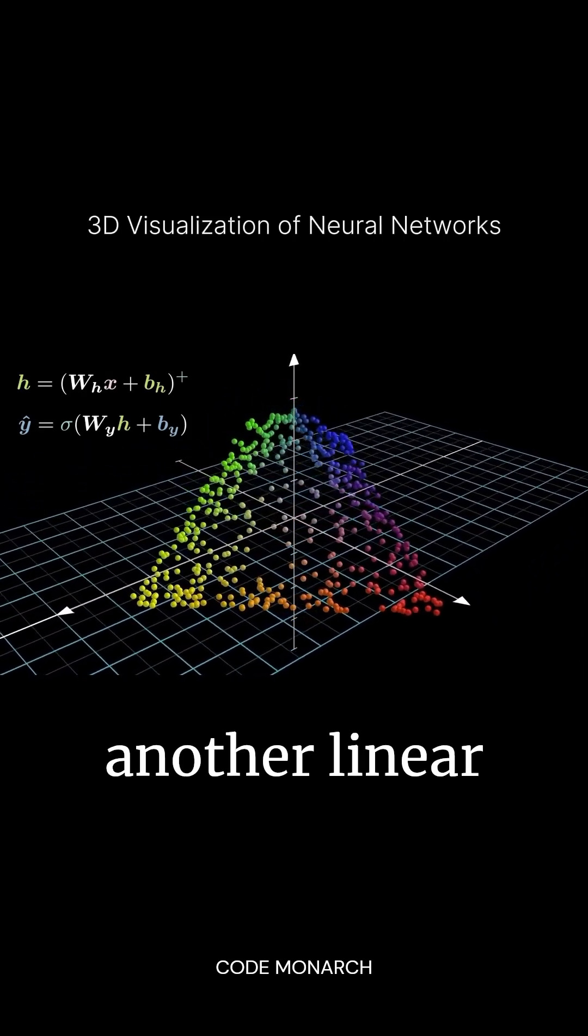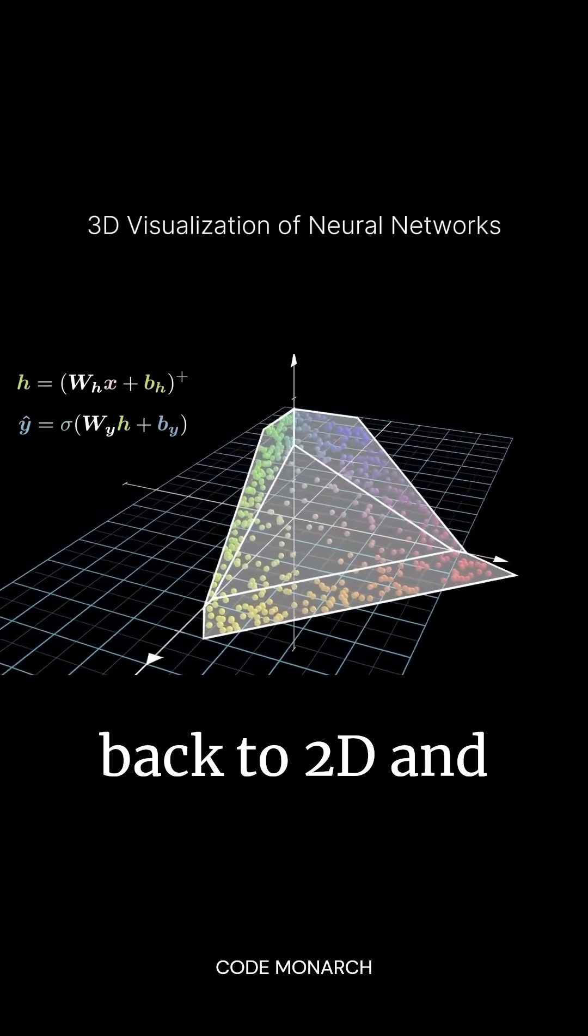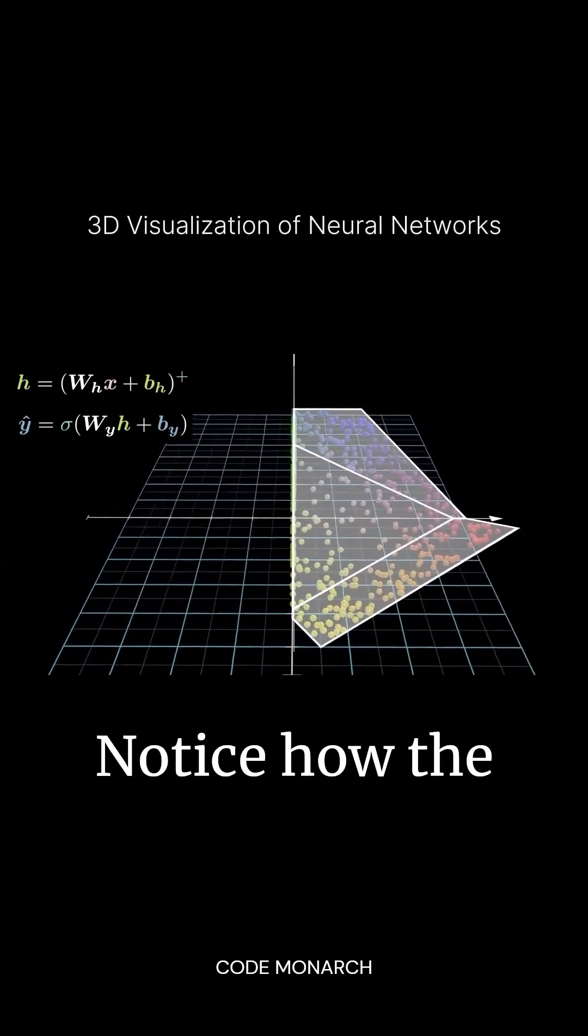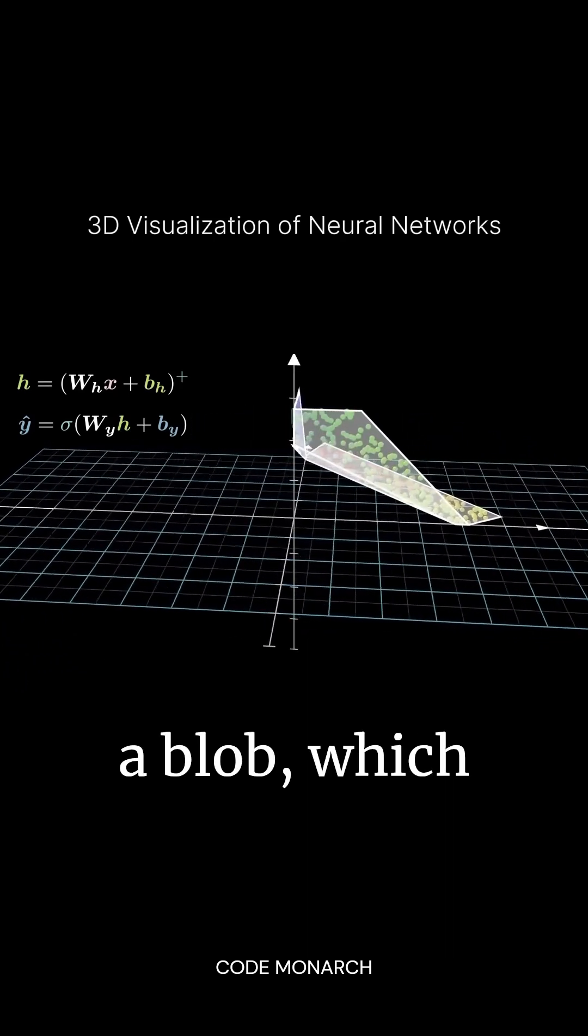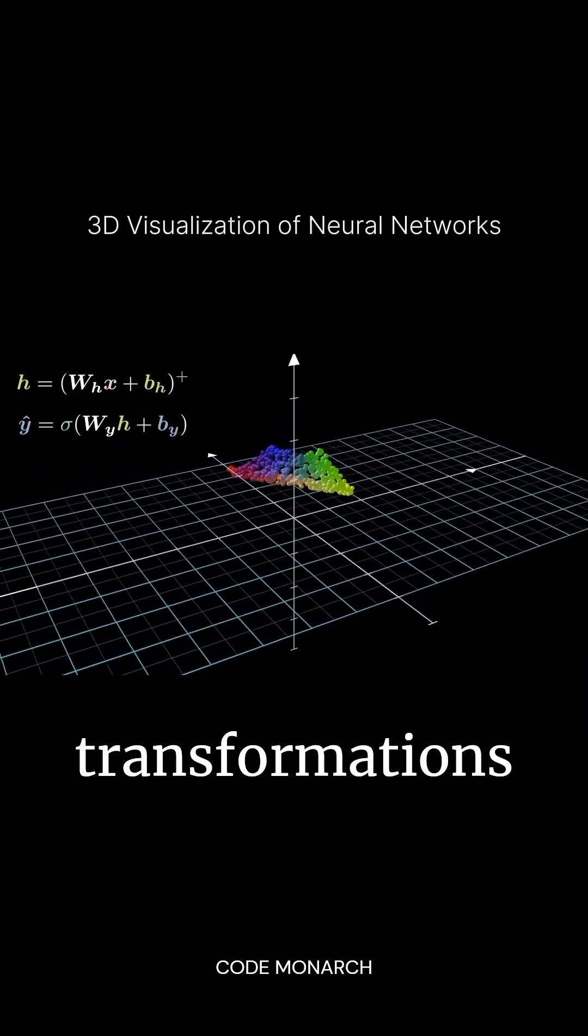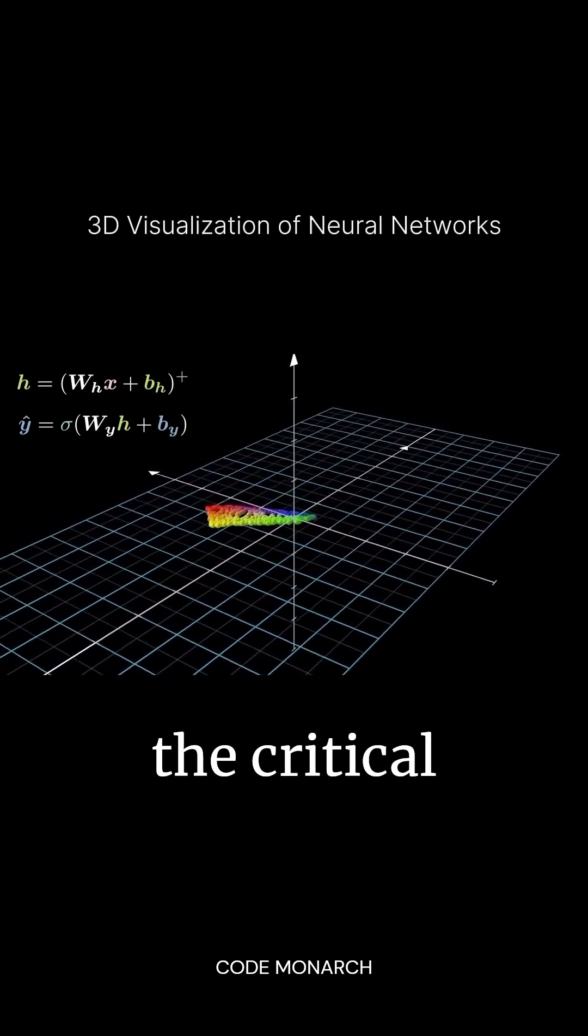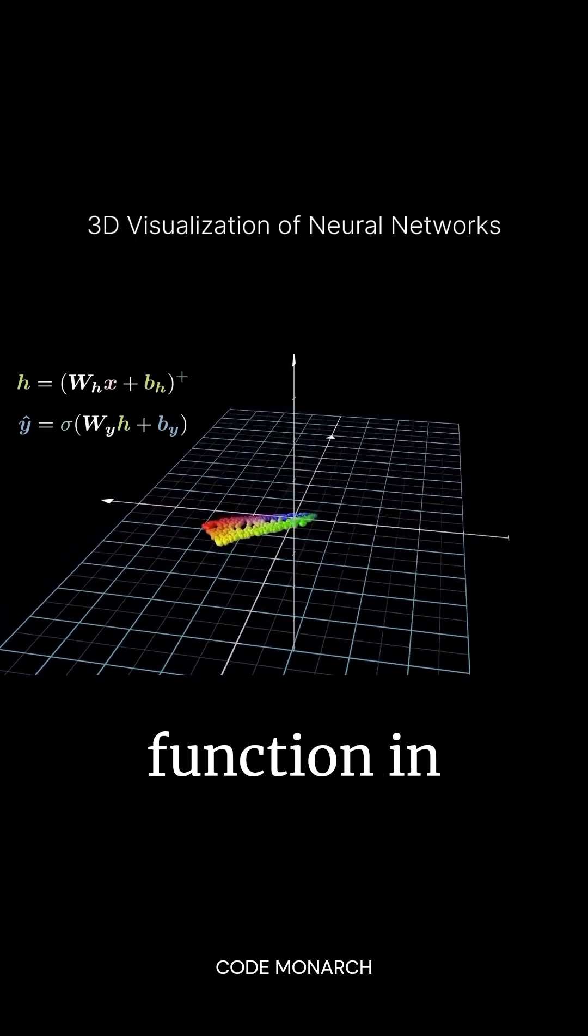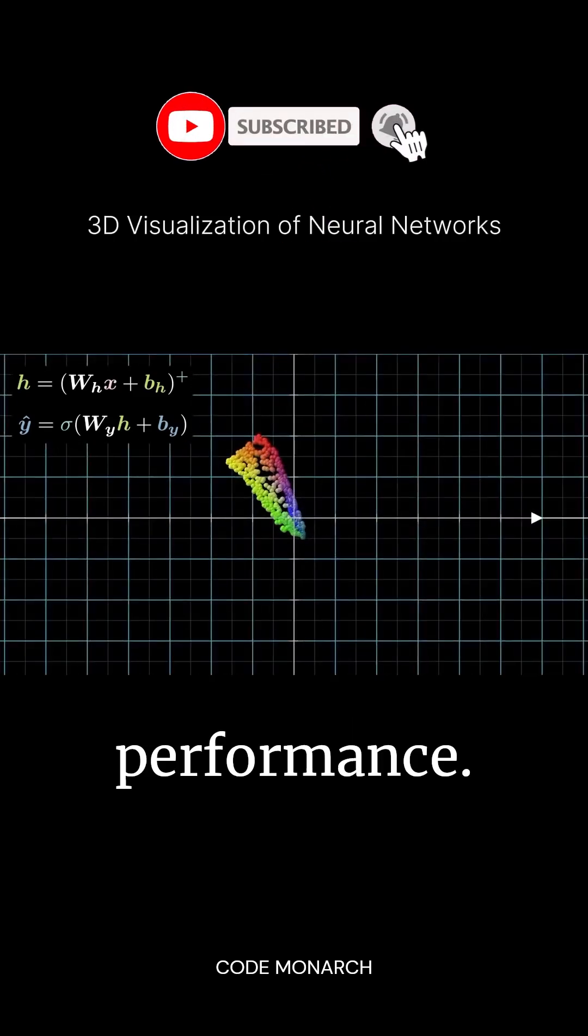After this, we apply another linear transformation back to 2D and add the bias. Notice how the data forms a unique shape, a blob, which is different from what we'd get with just linear transformations alone. This demonstrates the critical role of the activation function in shaping the data and enhancing model performance.